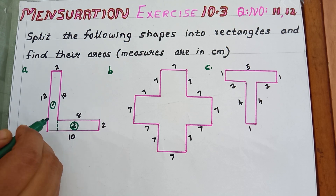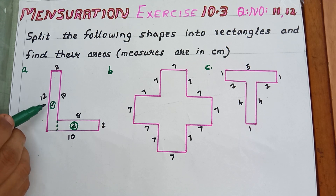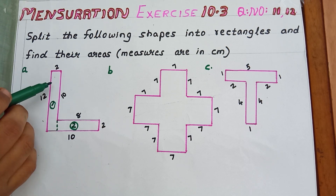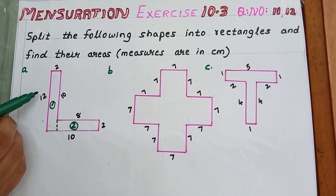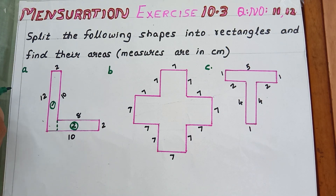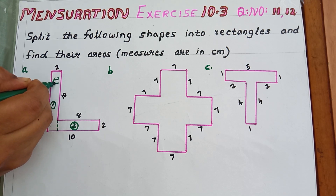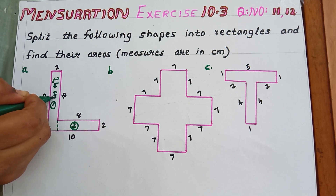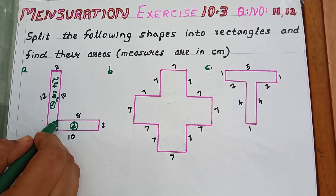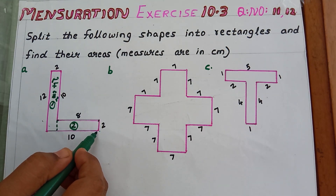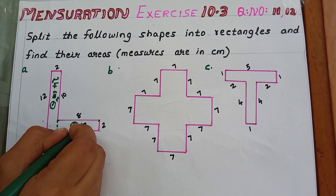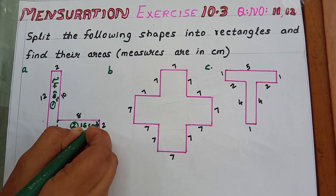For the first rectangle, the length is 12 cm and breadth is 2 cm. The area of this rectangle is length into breadth, that is 12 into 2, which equals 24 cm². For the second rectangle, its length is 8 cm and breadth is 2 cm, so 8 into 2 equals 16 cm².